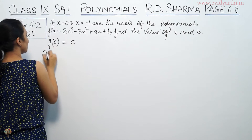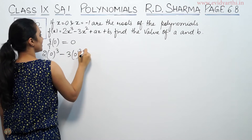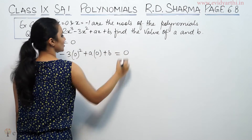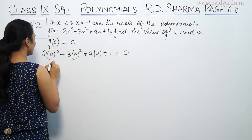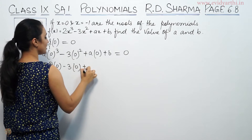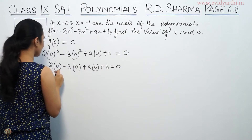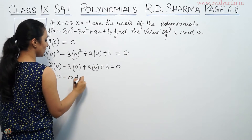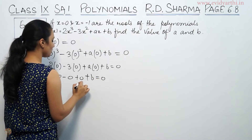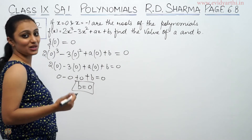So what have we been given? 2x³ minus 3x² plus ax plus b. Putting x equals 0: 2×0³ minus 3×0² plus a×0 plus b equals 0. Since all terms with x become 0, we get b equals 0.